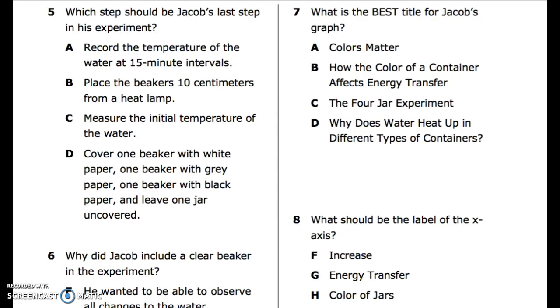Number 7: What is the best title for Jacob's graph? A. Colors matter. B. How the color of a container affects energy transfer. C. The four-jar experiment. D. Why does water heat up in different types of containers?